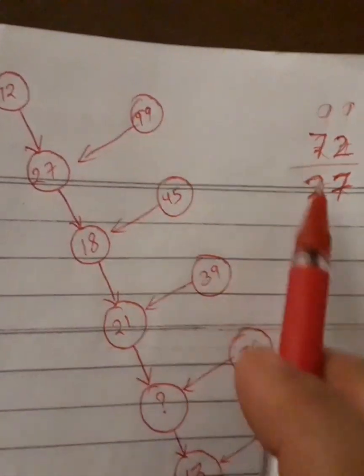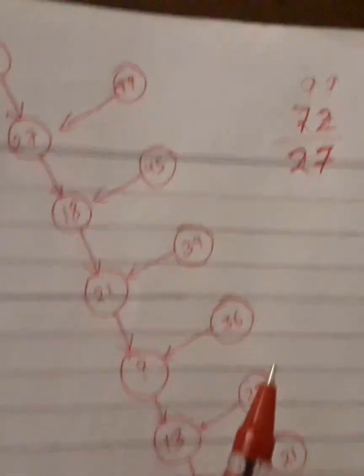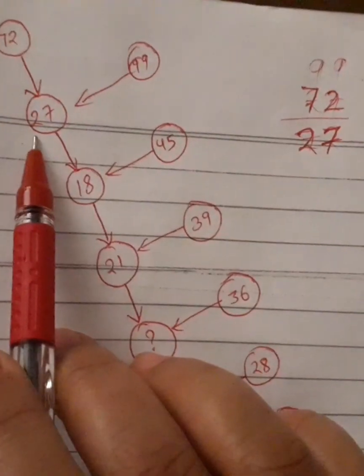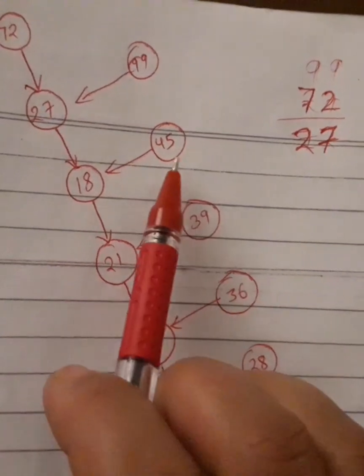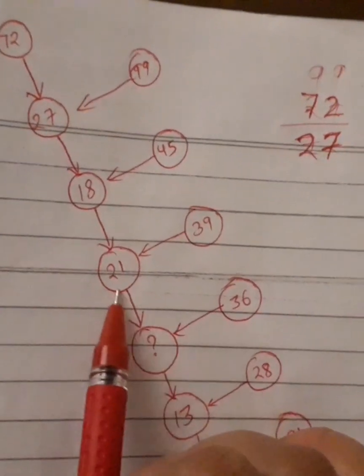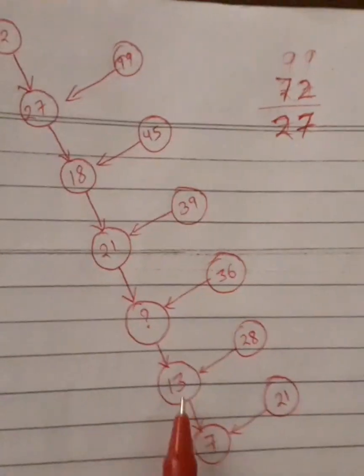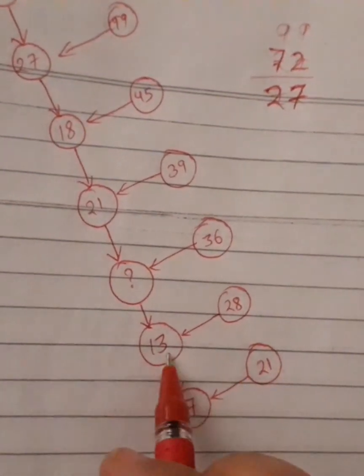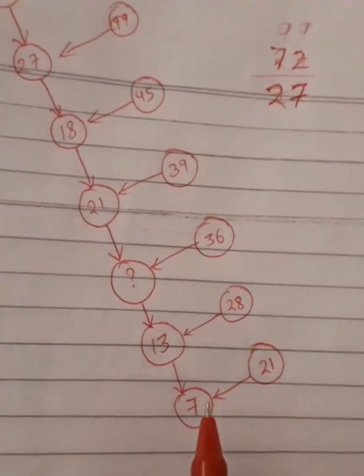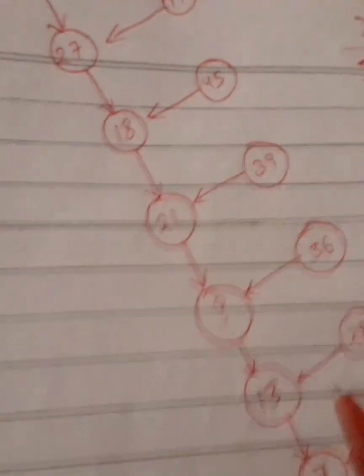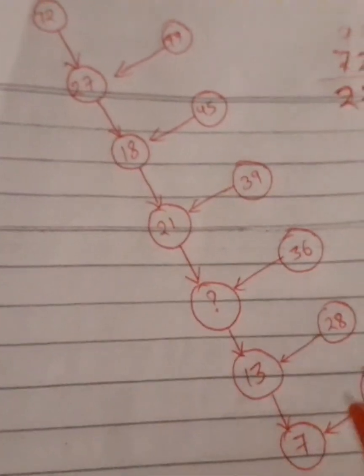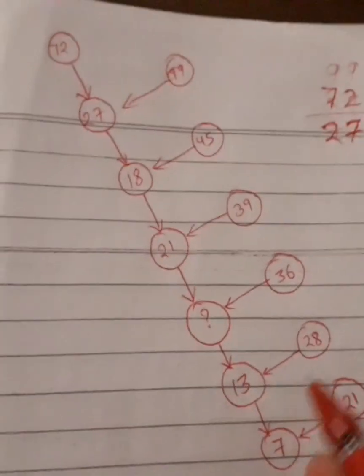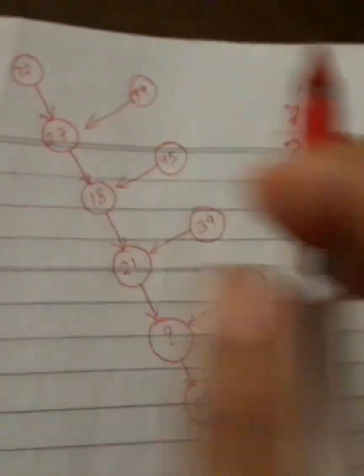This trick: 99 minus 72 is coming 27. Similarly, if you do 99 minus 27, it's coming 18. If you subtract this from this, this number is coming. But when we apply the same method here, 21 minus 13, it's coming 8. Yes, it's coming 8, but here it's given 7. That's why this trick won't apply.